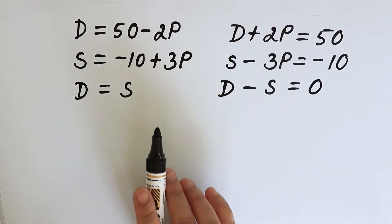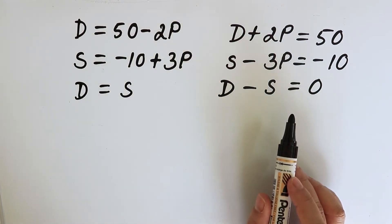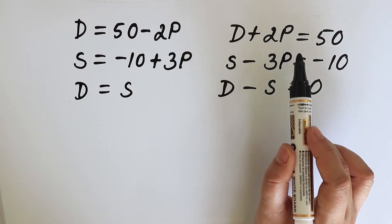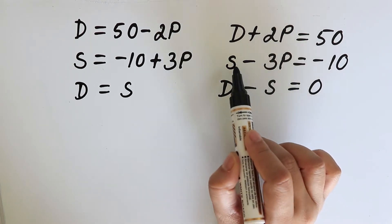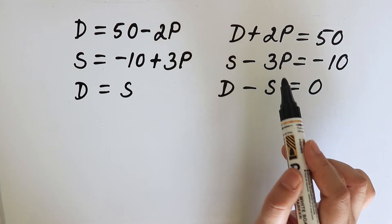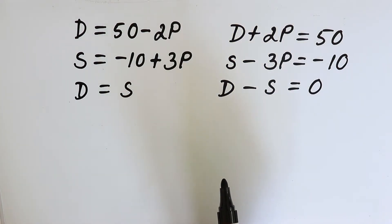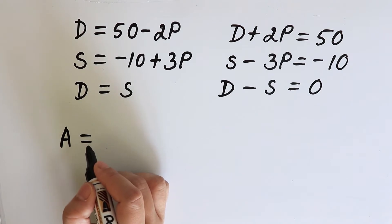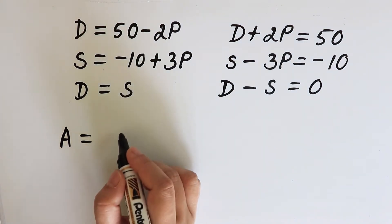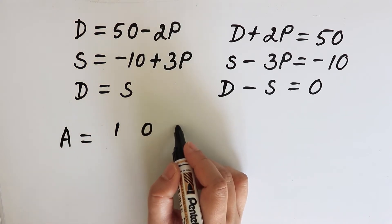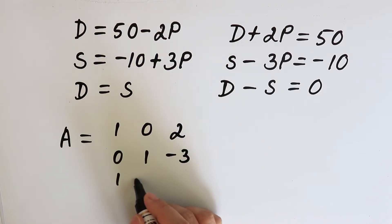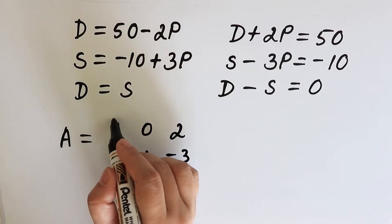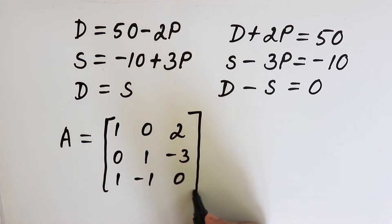Now, let us construct a matrix of the coefficients. The variable that is absent in an equation is given the coefficient 0. In the first equation, variable S is absent, so we will give a coefficient 0 to S. Let us name the matrix of coefficients as A. So, A is equal to: 1, 0, 2 / 0, 1, minus 3 / 1, minus 1, 0. This is the matrix of the coefficients.